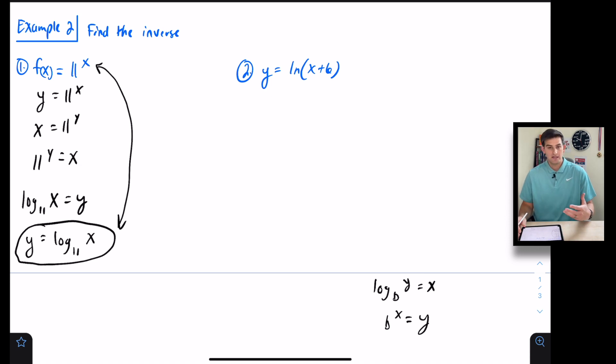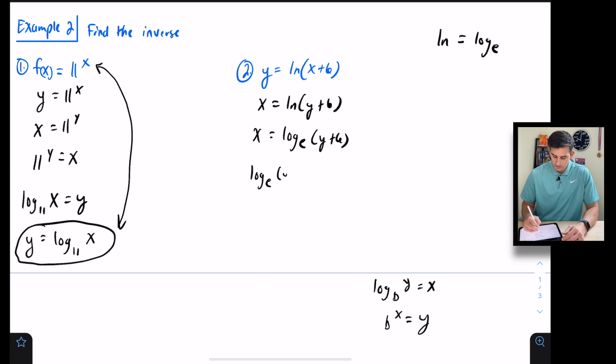For number two, we have a natural log, so y = ln(x + 6). We already have y, so let's switch the roles of x and y. Natural log is the same as log base e. Let's say we had x = log base e of (y + 6). To help us see it better, let's rewrite this as log base e of (y + 6) = x.